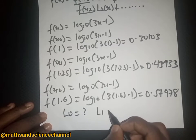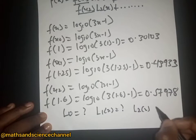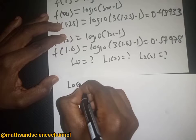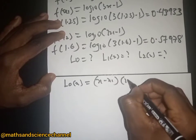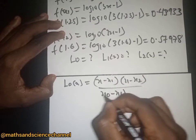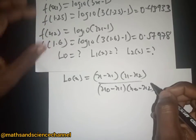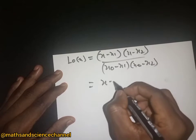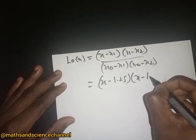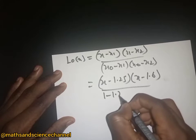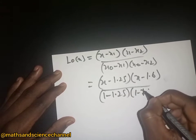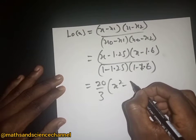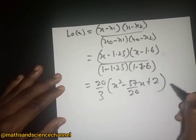Now we need to find L₀(x), L₁(x), and L₂(x). L₀(x) = (x - x₁)(x - x₂) / [(x₀ - x₁)(x₀ - x₂)]. Substituting x₁=1.25, x₂=1.6, x₀=1, we get (x - 1.25)(x - 1.6) divided by (1 - 1.25)(1 - 1.6), which gives 20/3. Expanding this, we get (20/3)(x² - (57/20)x + 2).